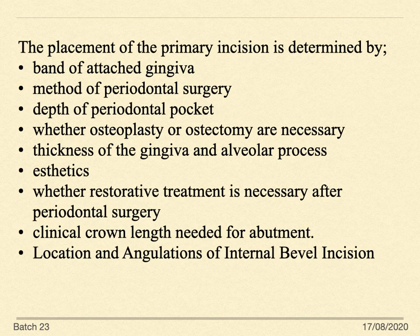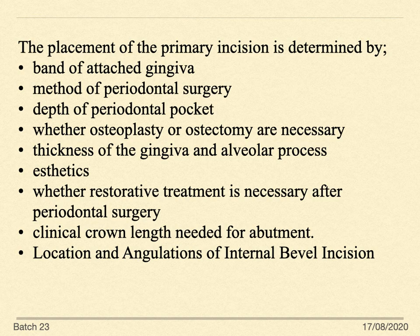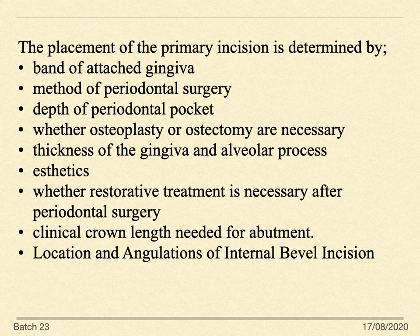The placement of the primary incision is determined by the band of attached gingiva, method of periodontal surgery, depth of the periodontal pocket, whether osteoplasty or osteotomy are necessary, thickness of the gingiva, alveolar crest, aesthetics, whether restorative treatment is necessary after surgery, clinical crown length needed for abutment, and the location and angulation of the internal bevel incision.